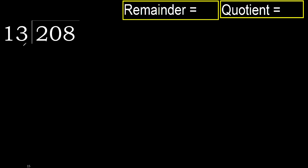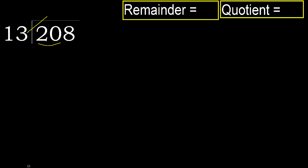208 divided by 13. 2 is less, therefore next 20. 20 is not less, therefore with 20 — 13 multiplied by which number is nearest to 20 but not greater?